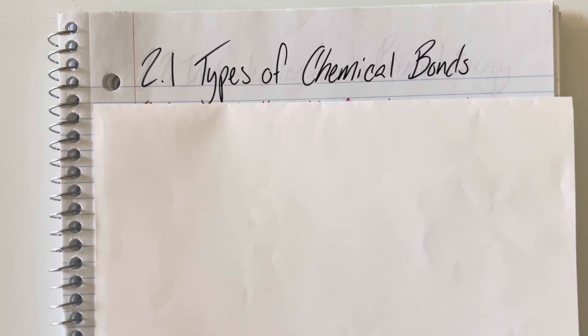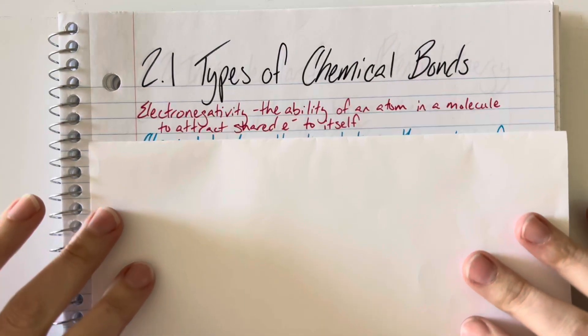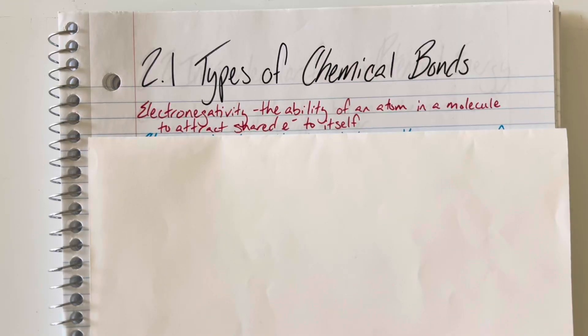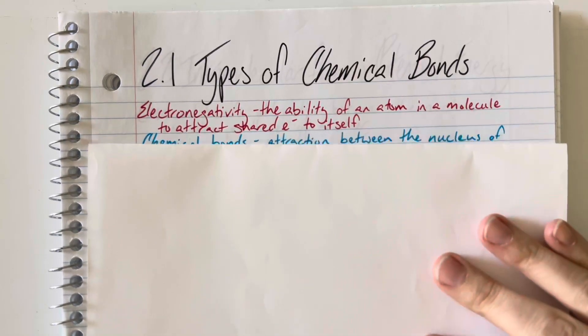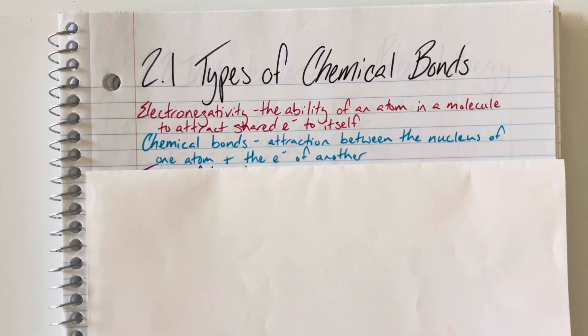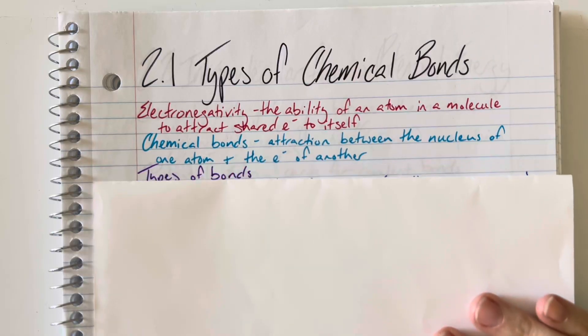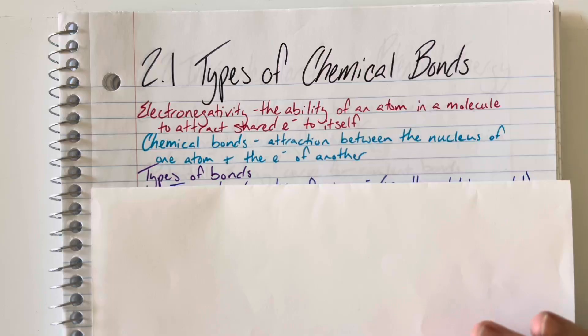AP CHEM unit 2.1, types of chemical bonds. Electronegativity is the ability for an atom in a molecule to attract any shared electrons to itself. Chemical bonds are the attraction between the nucleus of one atom and the electron of another. This forms our types of bonds.